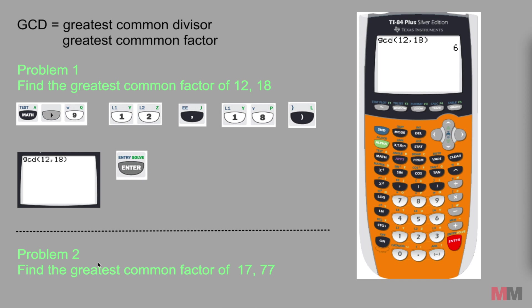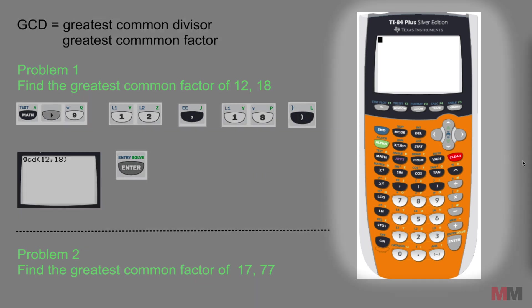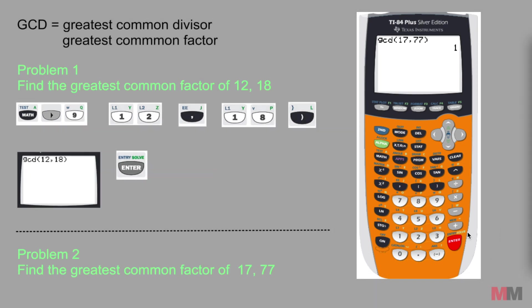So let's apply that to problem number 2 just to get some more practice. Again you hit math, right arrow key to the 9. Type in the two numbers with a comma and then complete the parentheses, enter. So sometimes that will show up as 1, meaning that there is no other number besides 1 that can be divided into 17 and 77.